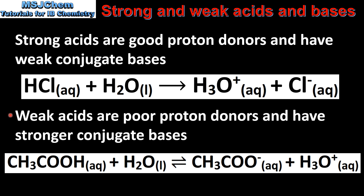Next we look at weak acids. Weak acids are poor proton donors and have stronger conjugate bases. Ethanoic acid is a weak acid. Its conjugate base is the ethanoate ion. Because the ethanoate ion is the conjugate base of a weak acid, that makes it a stronger base than the chloride ion, which is the conjugate base of a strong acid.